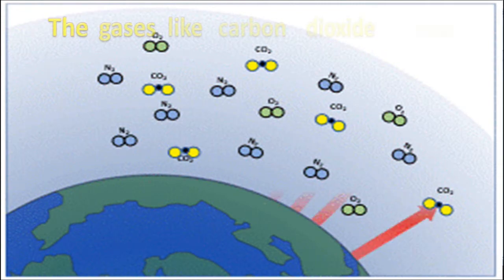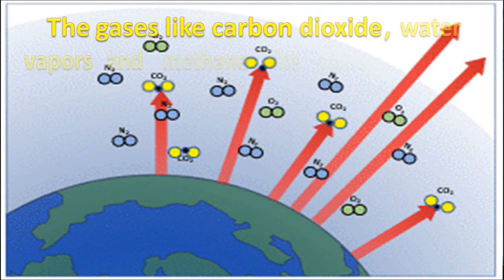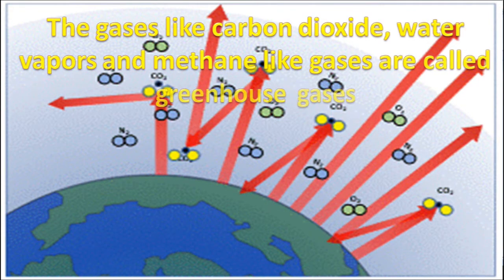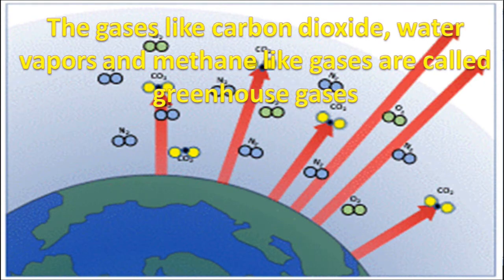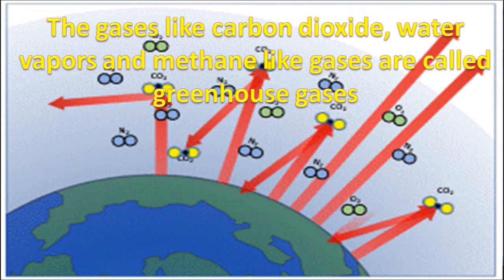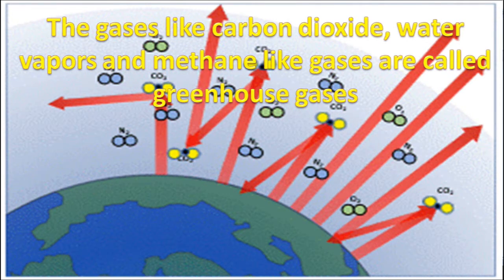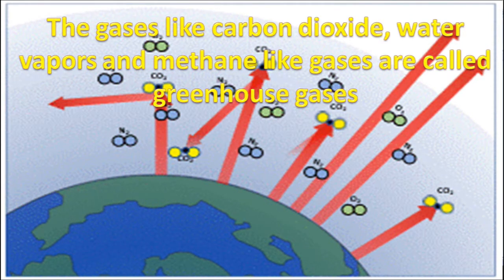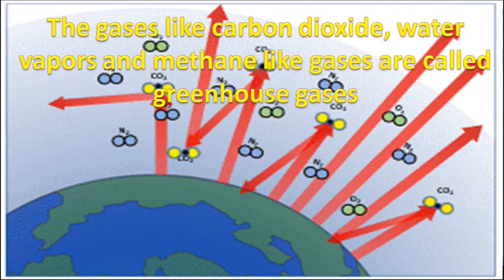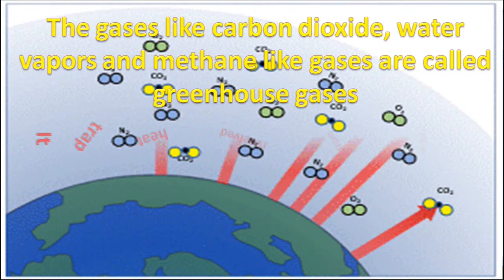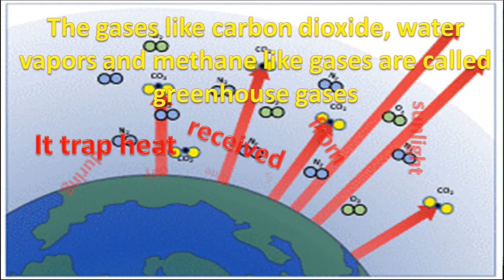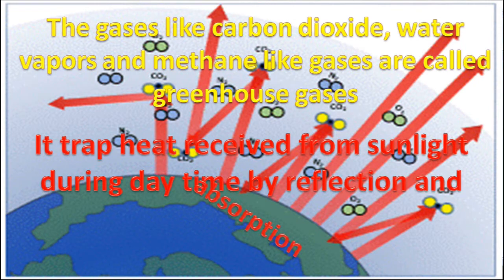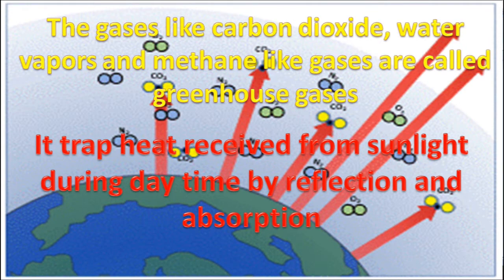Gases like carbon dioxide, water vapours, and methane are called greenhouse gases. These gases help to trap and reflect heat present in sunlight towards the earth's surface. It prevents the heat of sunlight from escaping into space. Greenhouse gases trap heat received from sunlight during the daytime.